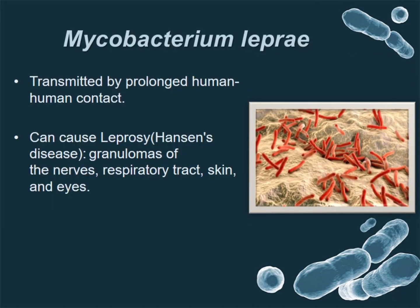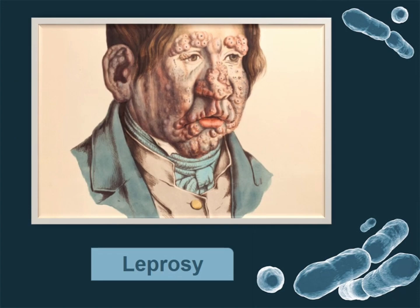The next one is Mycobacterium leprae. This one is transmitted directly through physical contact from person to person. Mycobacterium leprae causes leprosy, also known as Hansen's disease — a very disturbing type of disease in which granulomas become visible in the skin, nerves, respiratory tract, and eyes, as we can see in the picture.